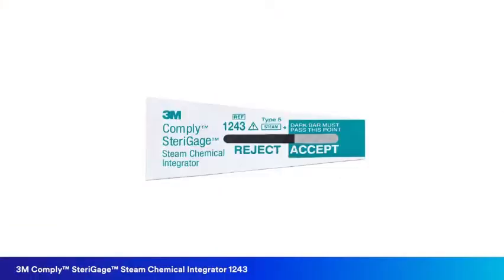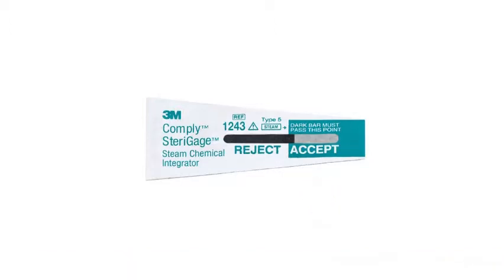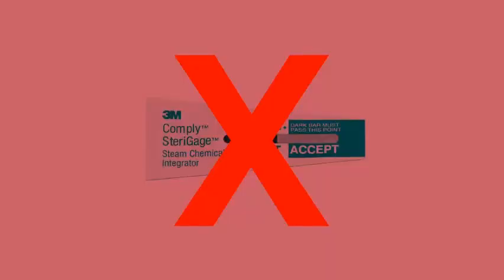A result of accept will be indicated after the integrator meets all parameters of sterilization. If the integrator bar does not enter the accept window, the item in the pack should not be used and should be reprocessed. A type 5 chemical integrator should be used inside of every pack and tray that is sterilized.